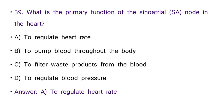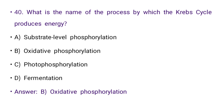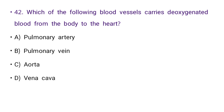Next: What is the name of the process by which the Krebs cycle produces energy? Options: substrate-level phosphorylation, oxidative phosphorylation, photophosphorylation, or fermentation. The right answer is B: oxidative phosphorylation.